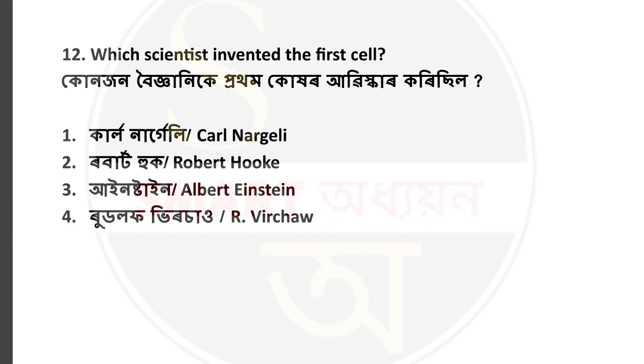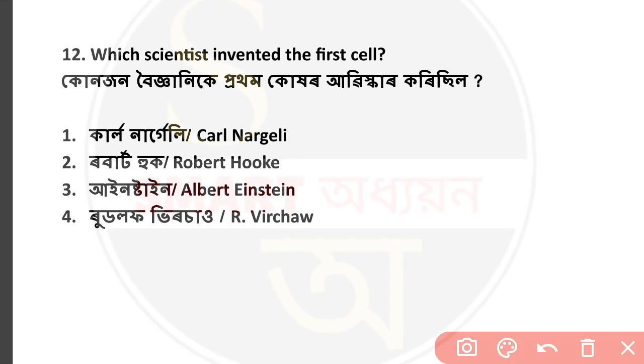Question number 12: Which scientist invented the first microscope? The answer is Robert Hooke — he invented the microscope. Option number 2 is correct.